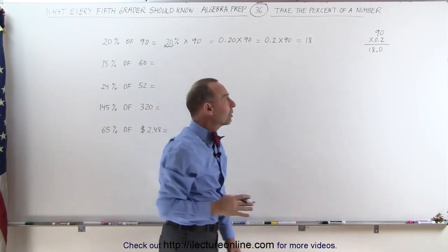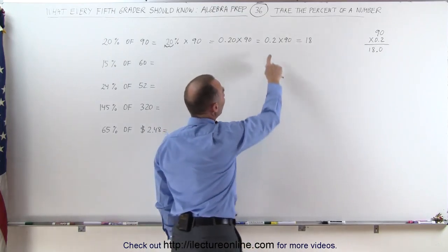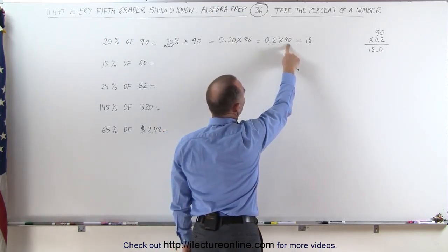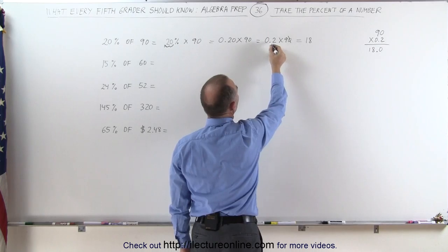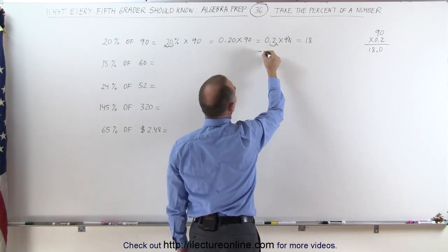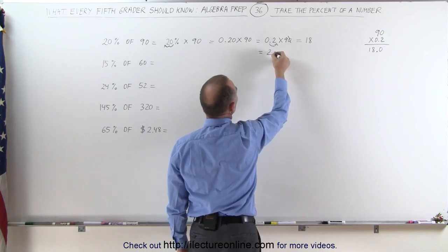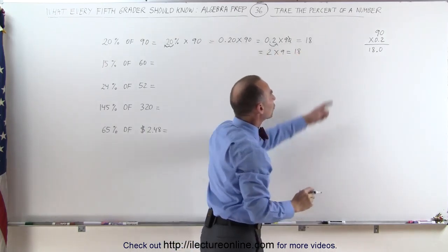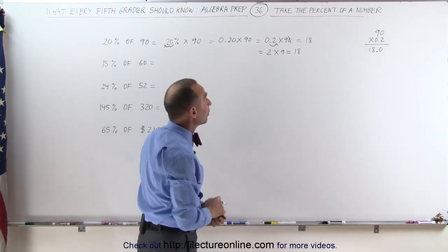There's actually a pretty neat trick you can use. If the first number has one decimal place and the second number has a zero, you can divide this number by 10 by removing the zero, and multiply this number by 10 by removing the decimal place. So this can be written as 2 times 9, which is 18. That's a lot easier than longhand multiplication.